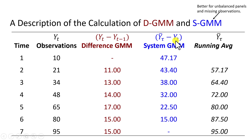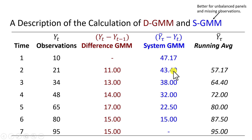As you see in this illustration, in the second time period we calculate the average of the future observations from 34 down to 95, which comes out to 64.40, and 64.40 minus 21 gives us 43.40. You can already see that this manner of differencing is more robust when it comes to the use of unbalanced panels and missing observations.